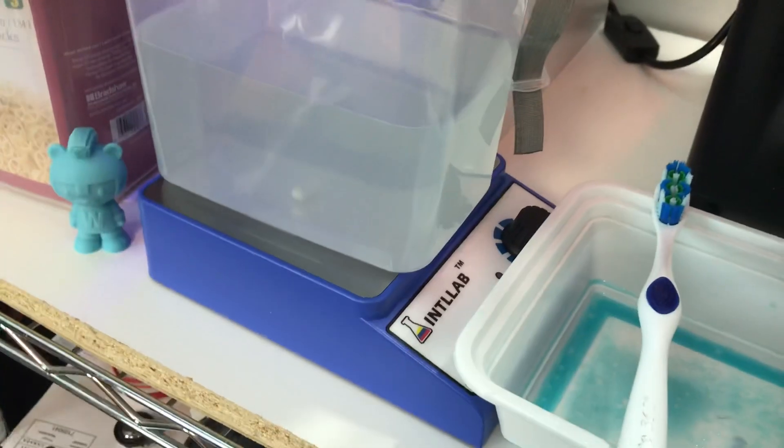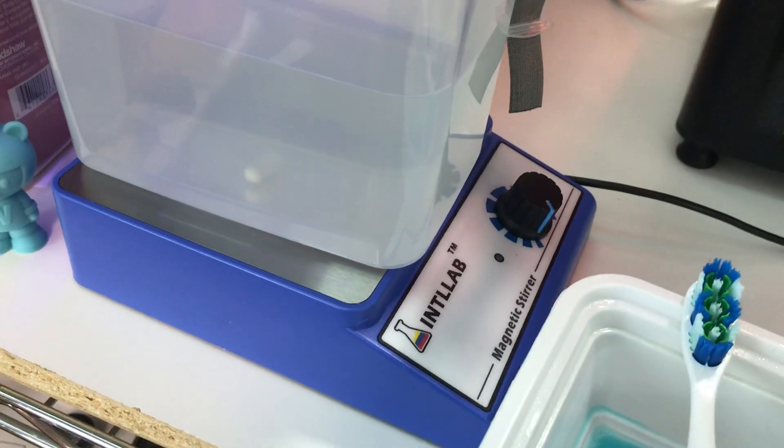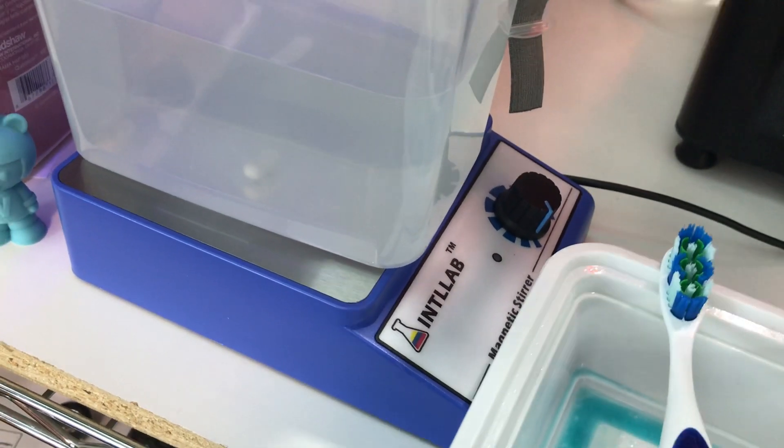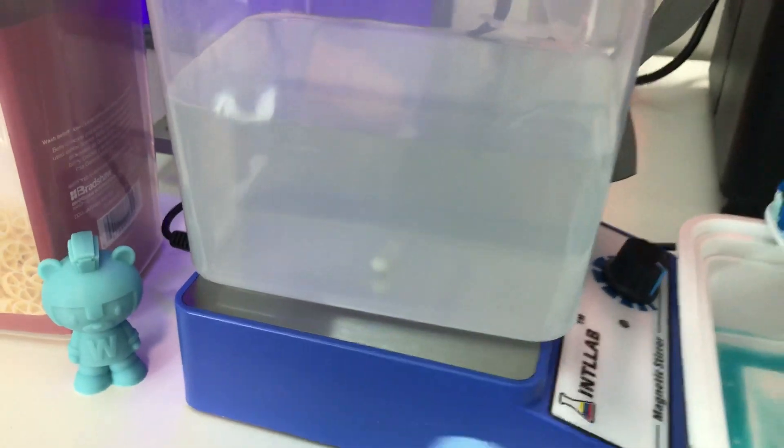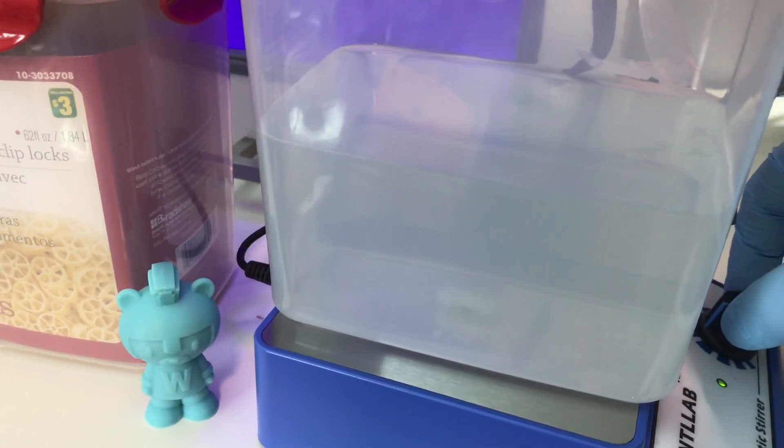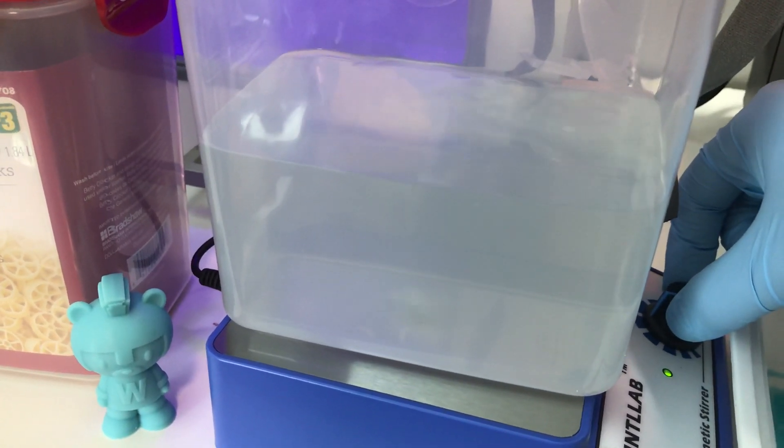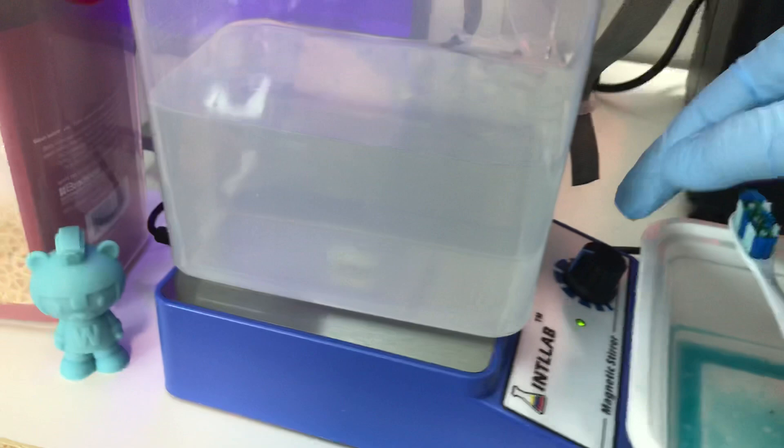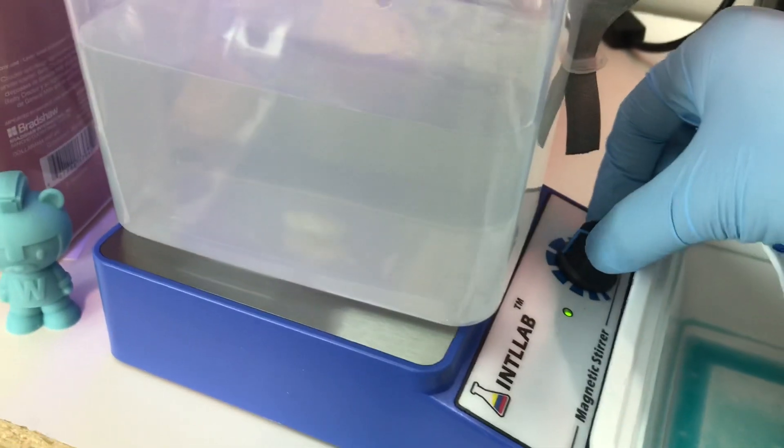I also got this cheap magnetic stirrer off Amazon for $35 Canadian, probably about $28 US. It has this little magnetic stir stick thing inside. You can use this control knob to turn it on and spin that thing inside. If you've seen the Anycubic wash station where you can cure and wash in the same thing, this is like a budget version of essentially what that same thing is doing. You can use that knob to control the speed—that's about halfway.